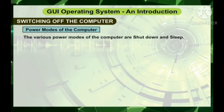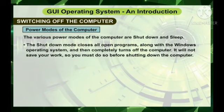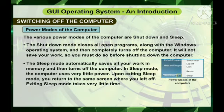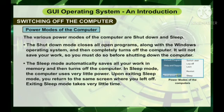The various power modes of the computer are Shutdown and Sleep. The Shutdown mode closes all open programs along with the Windows operating system and then completely turns off the computer. It will not save your work, so you must do so before shutting down. The Sleep mode automatically saves all your work in memory and then turns off the computer. In sleep mode the computer uses very little power. Upon exiting sleep mode, you return to the same screen where you left off, and exiting sleep mode takes very little time.